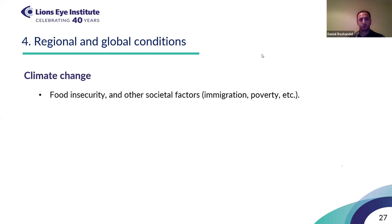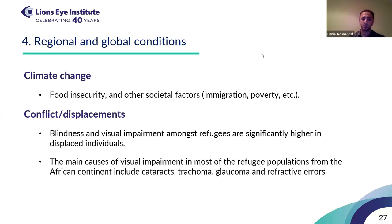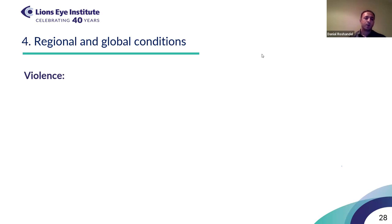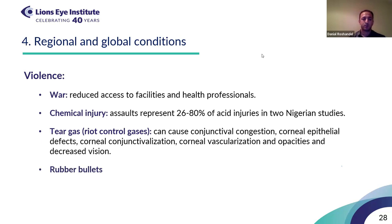Climate change may cause food insecurity and other societal challenges like immigration, poverty, and conflicts that can affect the ocular surface. Refugees and displaced persons are at higher risk for blindness and visual impairment — the main causes of visual impairment in displaced refugees in the African continent were cataract, glaucoma, and refractive errors — and adequate nutrition and access to sanitation are very effective in reducing these visual problems. Violence — including war, chemical injuries, tear gas used in riot control, rubber bullets, and domestic violence — are different kinds of violence that can affect ocular surface health.